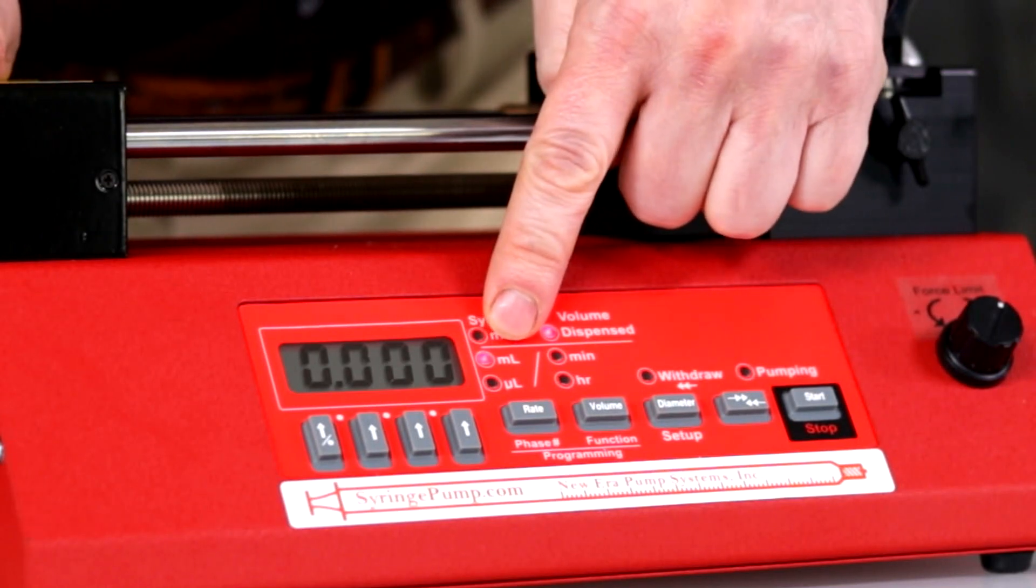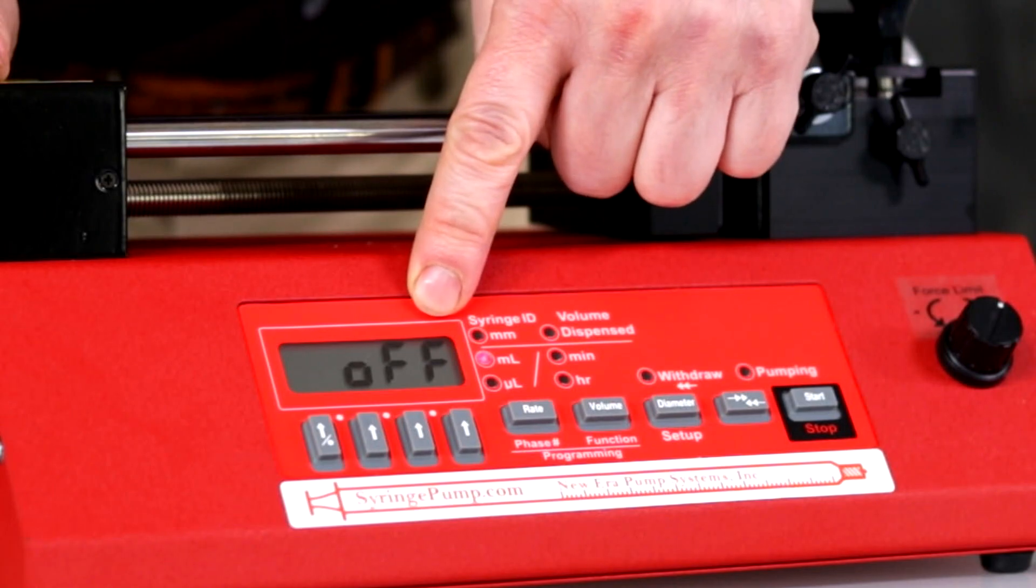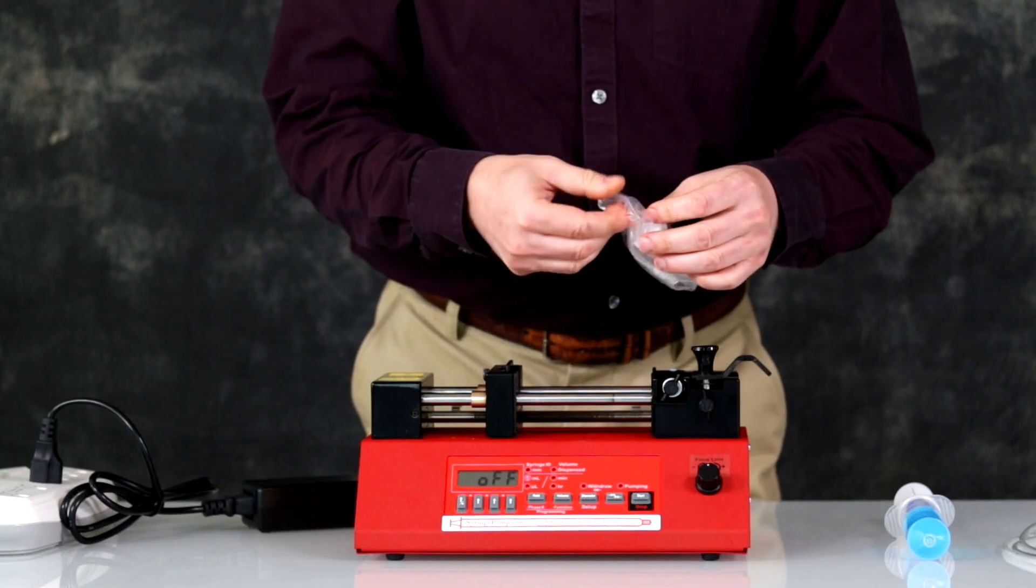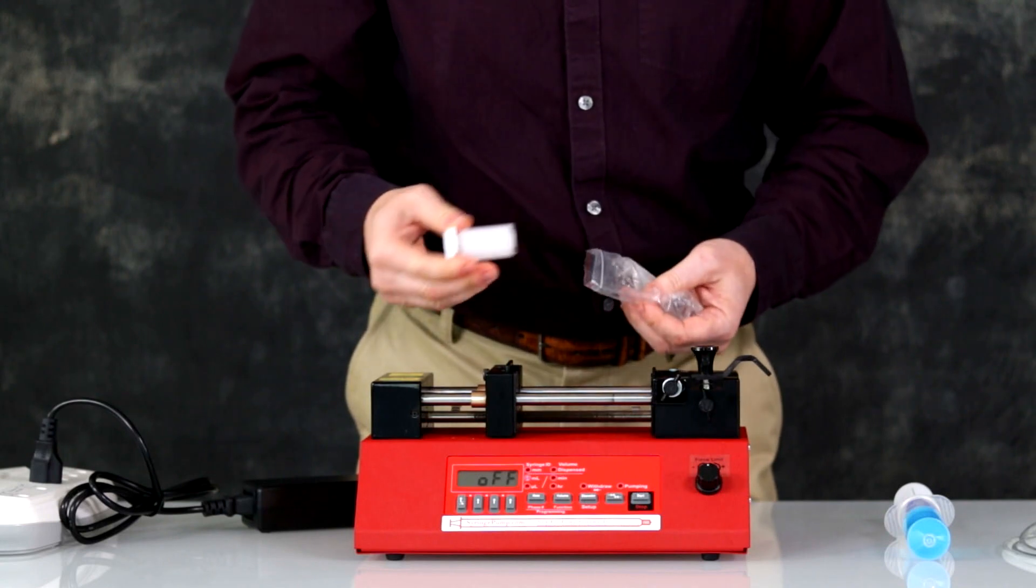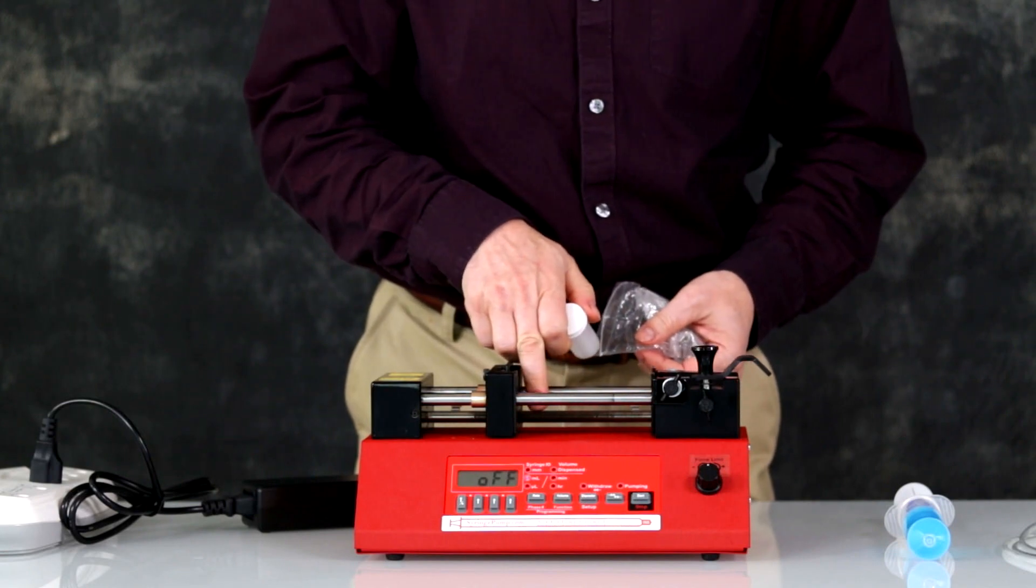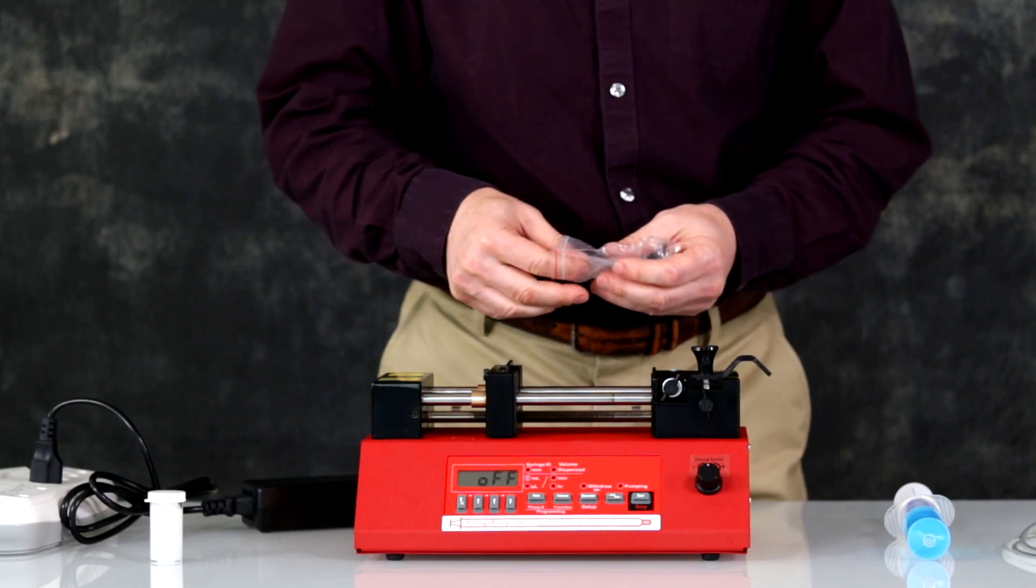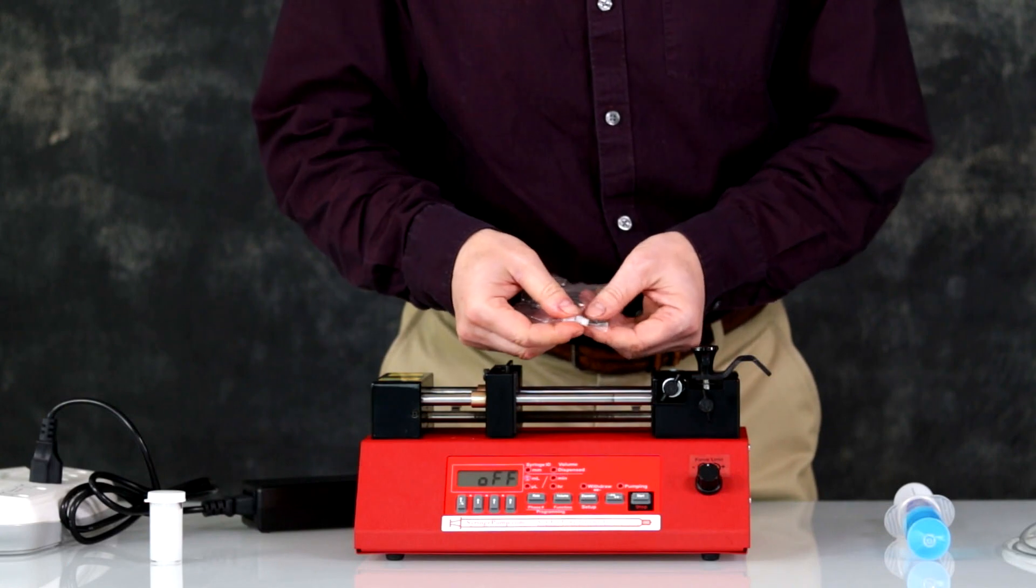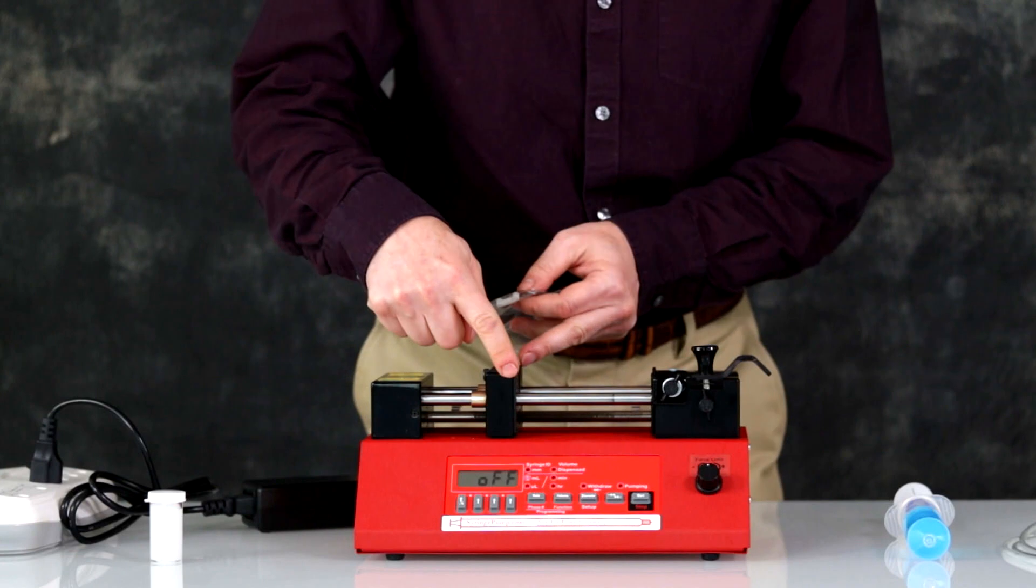NE-8000 included accessories. Included with the NE-8000 is a vial of grease and connectors. The grease is used for lubricating the guide rods and lead screw. Also included are adapters, screws, and spacers for specialized syringes such as stainless steel syringes that need a wider gap.